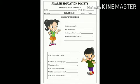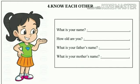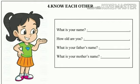So let's begin. This is your worksheet. The first question is: What is your name? You have to write the correct spelling of your name over here properly. Next question: How old are you? You have to write your age in numbers over here.